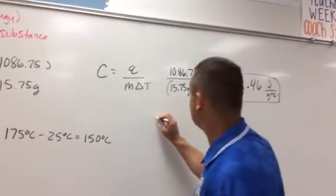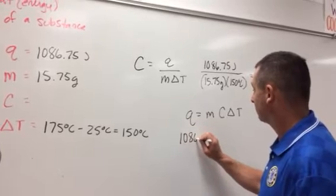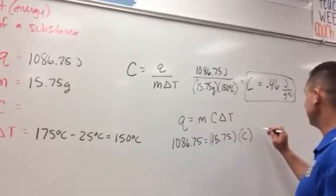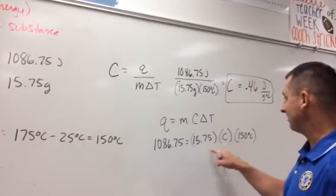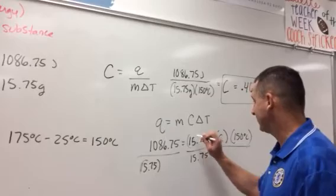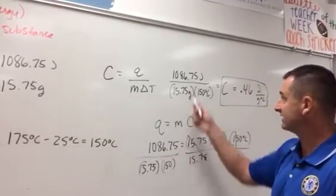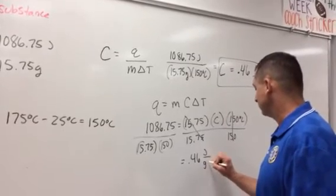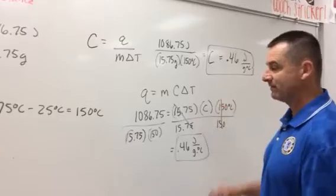The other way to do it is to use your Q equals MCAT formula and solve for C algebraically. Q is 1,086.75, M is 15.75, C is my unknown X, and delta T is 150 degrees Celsius. Since M and delta T are multiplied by C, I divide both sides by 15.75 and by 150 degrees Celsius to isolate C. That gives the same answer: 0.46 joules per gram degree Celsius. Remember, when solving algebraic equations, you need your unknown on top by itself.